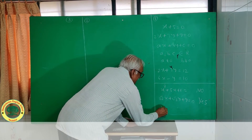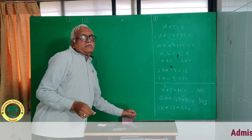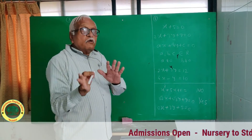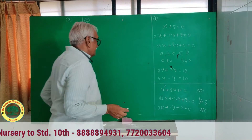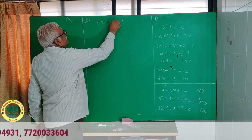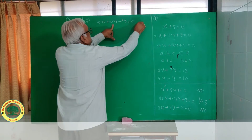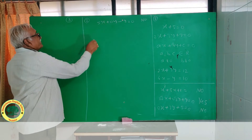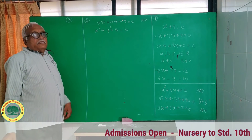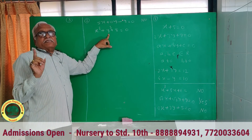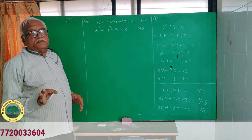Consider 0x plus 3y plus 5 equal to 0. Is it a linear equation in 2 variables? No, because a is 0, therefore it is not a linear equation. Similarly, 5x plus 0y minus 8 equal to 0 — here b equal to 0, therefore it is not a linear equation. Also, if 2 variables are present but the degree is not 1, it is not a linear equation in 2 variables.